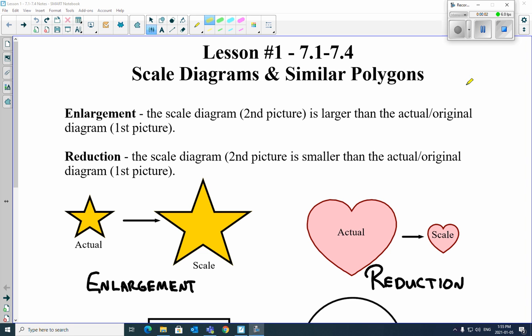Okay, this is 7.1 to 7.4, scale diagrams and similar polygons. We'll go over these notes pretty quick. There's not a lot of difficult stuff here. So what we're talking about is enlargement and reductions, and you already know enlargement reductions. You've seen this any time if you ever did any photocopying, right, or stuff like that. So an enlargement is when you actually take the actual, so the one on the left here, and move to a new scale picture.